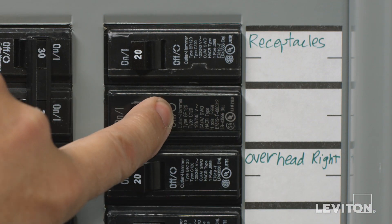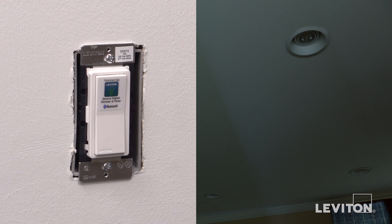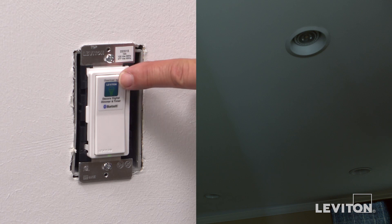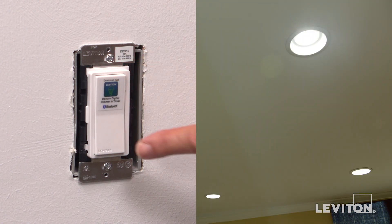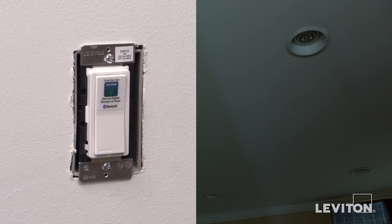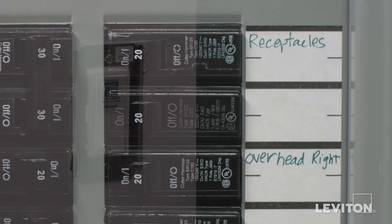Restore power at the circuit breaker. The status light on the device will turn green. Press the top of the switch to turn the light on. Press the bottom of the switch to turn the light off. If functioning properly, switch the power off at the circuit breaker.